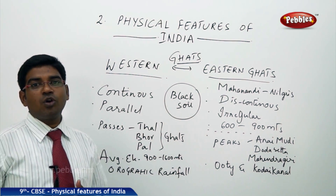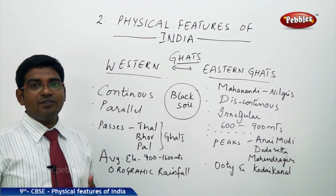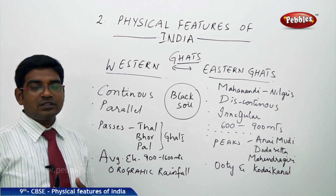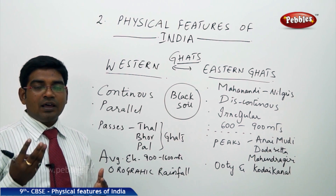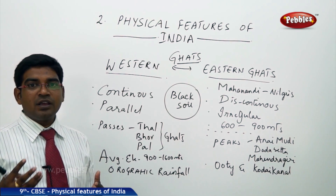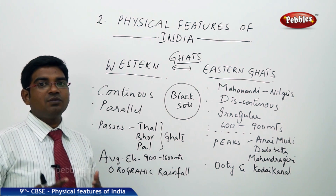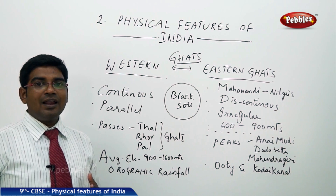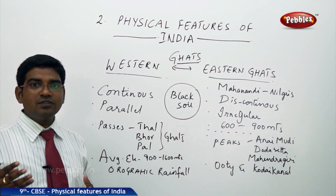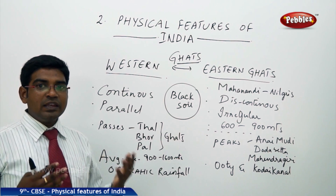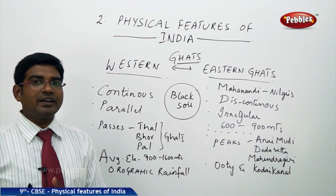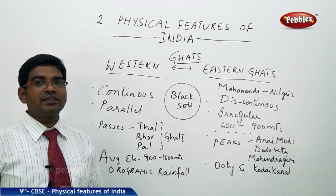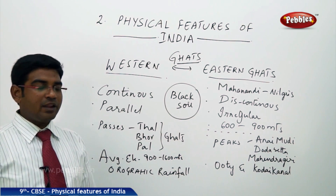In orographic rainfall, the Arabian Sea is on the western side of the Western Ghats. The moisture or water vapor which moves towards the Western Ghats automatically rises to pass over, resulting in the cooling of the water vapor into water. So we have the leeward side and the windward side happening here, and that is how the Western Ghats receive orographic rainfall.